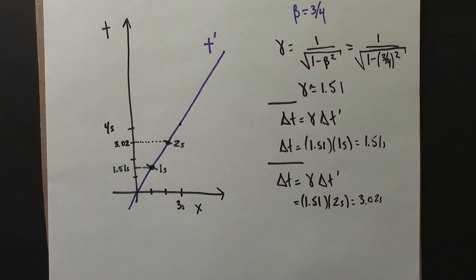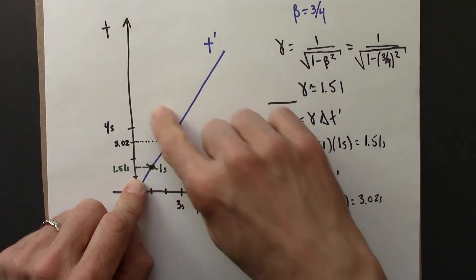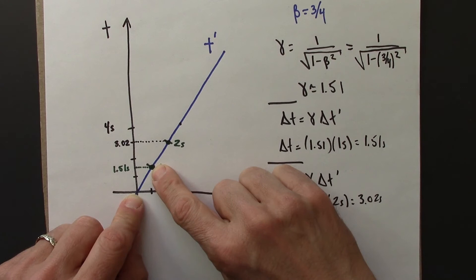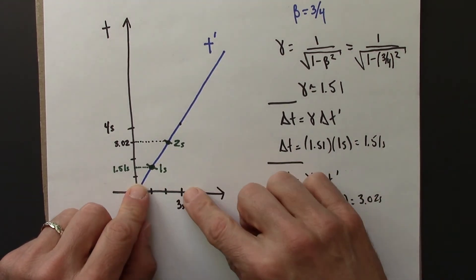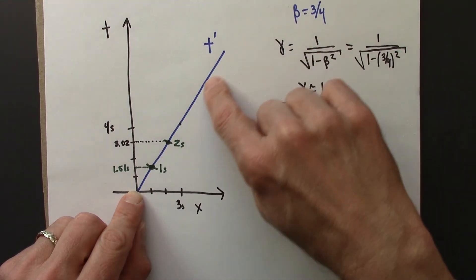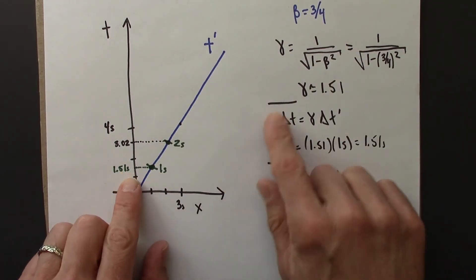So this is the start of a 2-observer space-time diagram. And at this point, we've seen how to draw the t prime axis and how to calibrate it using this gamma.